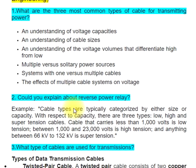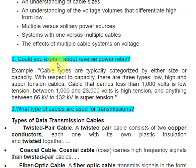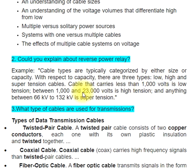Question 2: Could you explain about reverse power relay? Cable types are typically categorized by either size or capacity. With respect to capacity, there are three types: low, high, and super tension cables. Cable that carries less than 1,000 volts is low tension; between 1,000 and 23,000 volts is high tension; and anything between 66 kilovolts to 132 kilovolts is super tension.